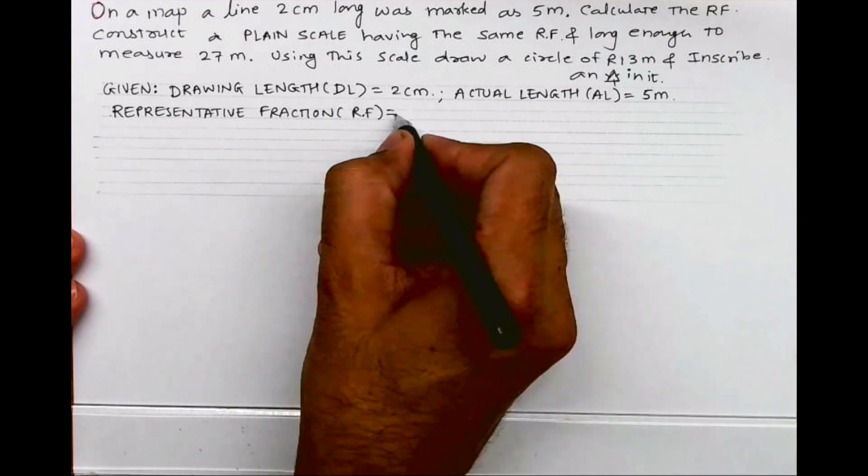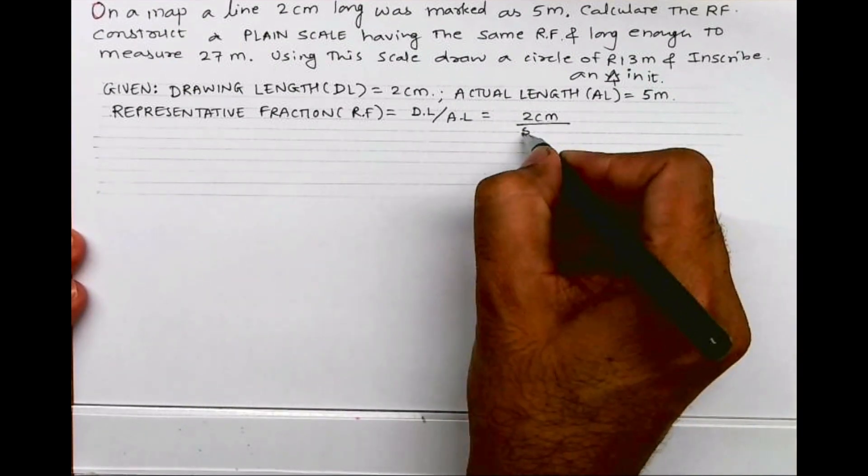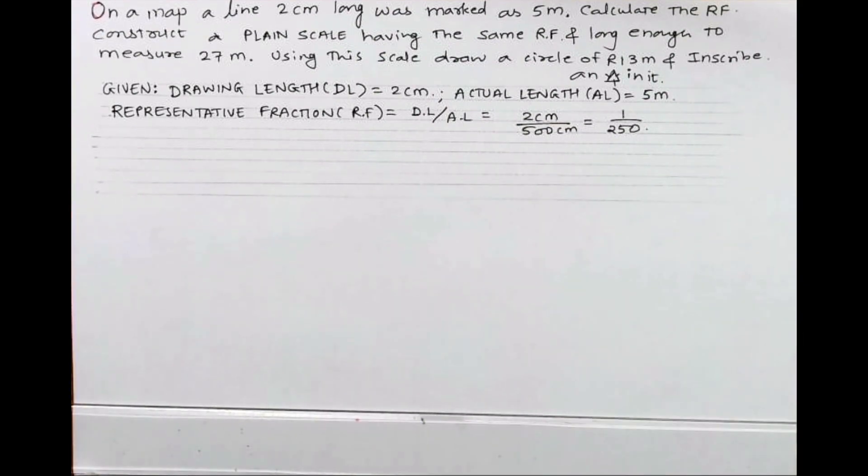So I need to write this in guideline. Drawing length upon actual length, which is 2 cm upon 500 cm, which will be 1 upon 250.